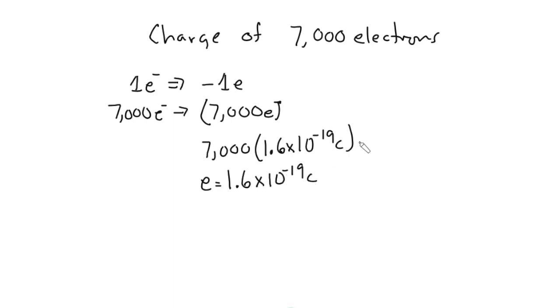All right. And this would now, when you multiply that out using your calculator, this is the charge of 7,000 e. So that's how we go from having an amount of electrons or an amount of protons to its charge.